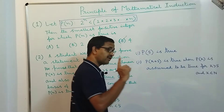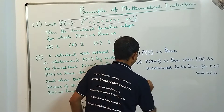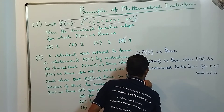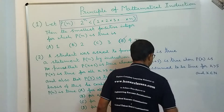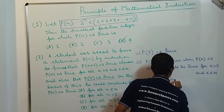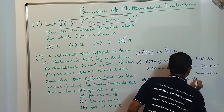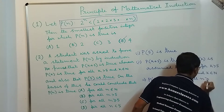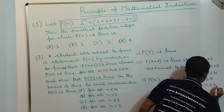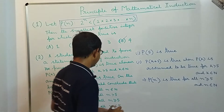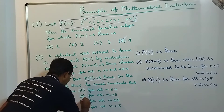If you look into our first session on the principle of mathematical induction, you will find that I discussed this particular point. That means the mathematical proposition P(n) is true for all n ≥ 5 and n ∈ ℕ. So out of the four options, option C is correct.